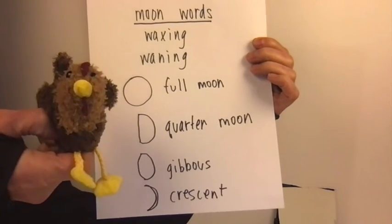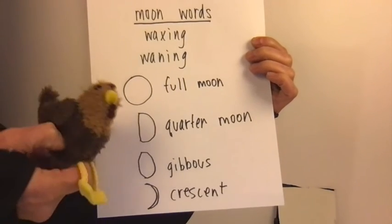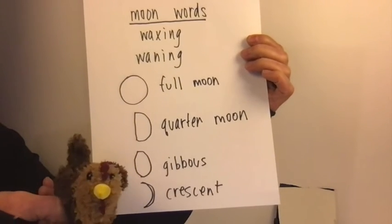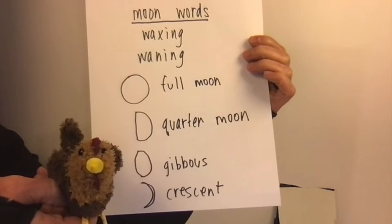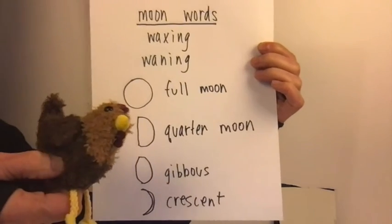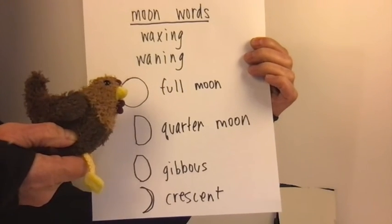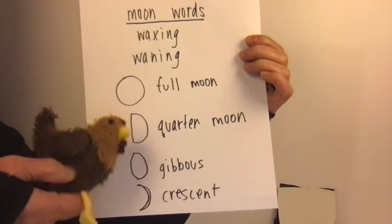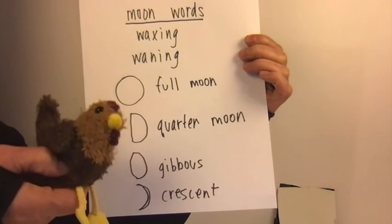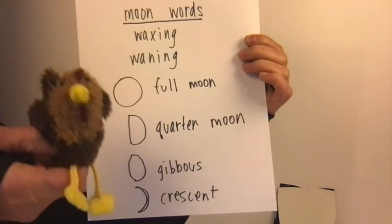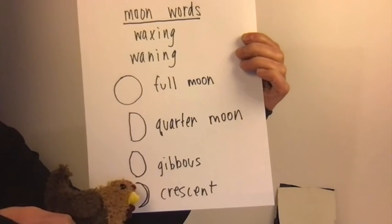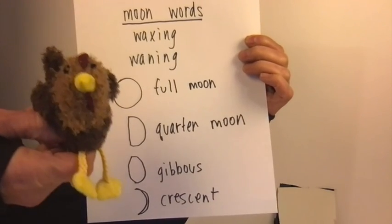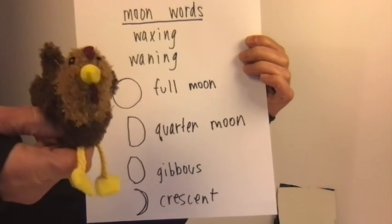A gibbous moon is when it's a little more than half — it's between a half and a full. And a crescent moon is when it's just like a little bit of a sliver, sort of looks like a fingernail clipping. So the way it works is: if the moon is full and it's getting smaller, it'll go full, then gibbous, then quarter, then crescent, and you call that waning because it's getting smaller that whole time. And when it's going from crescent to full, that whole time it's waxing because it's getting bigger. So those are some fun words that you could try! Bye!